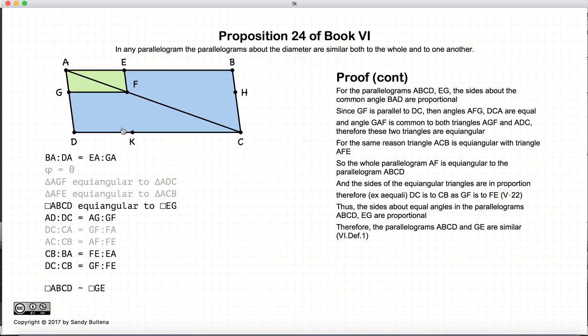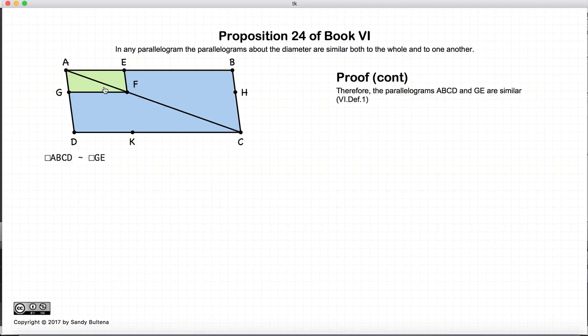And therefore, since these angles are all equal and the sides about the parallelograms are proportional, then by definition, ABCD or this big blue parallelogram is proportional to GE, this little green parallelogram. So let's start right here. We're continuing on, but this was the last proof that we had from the previous slide.